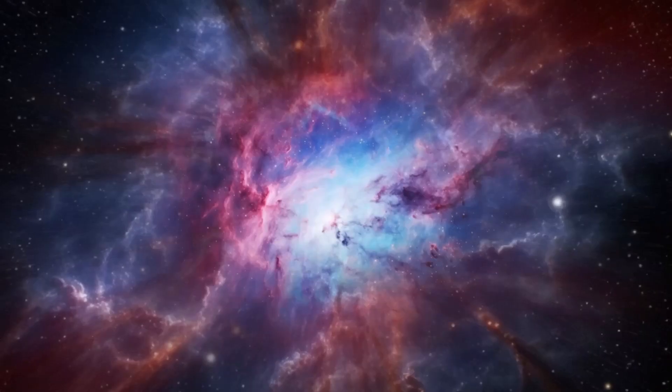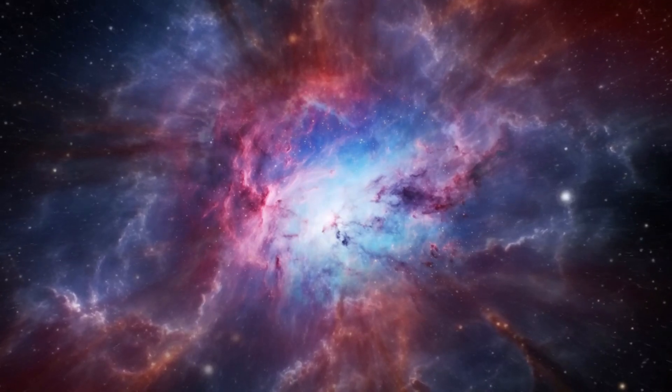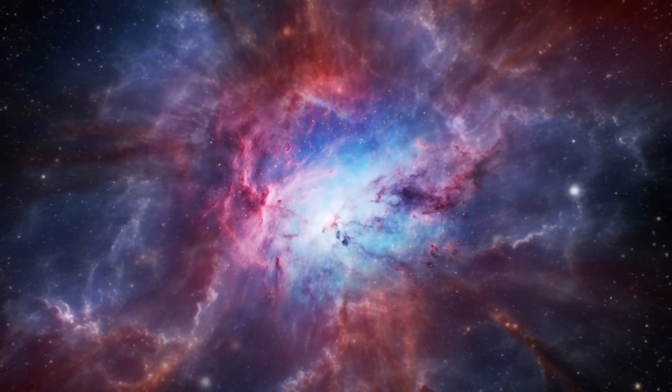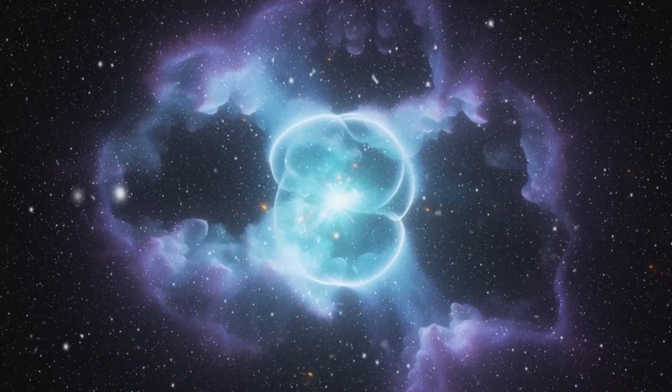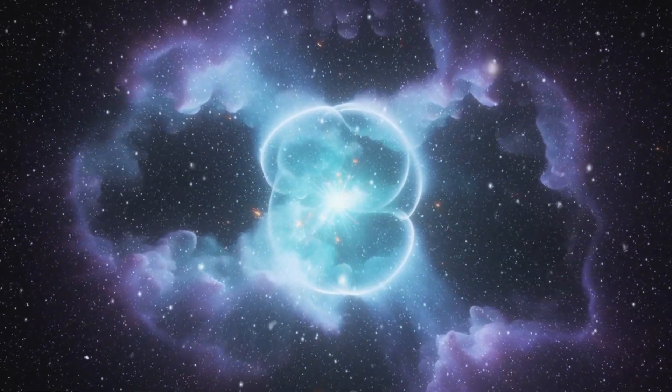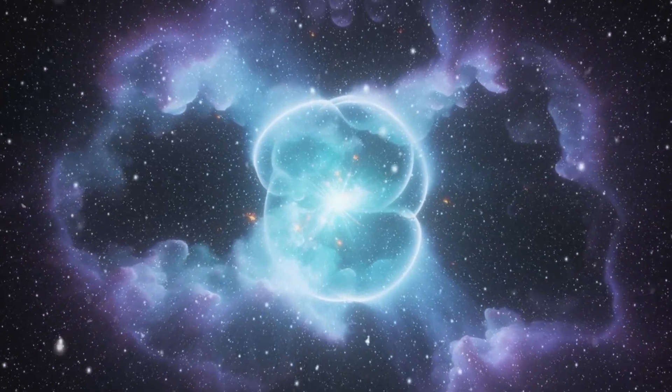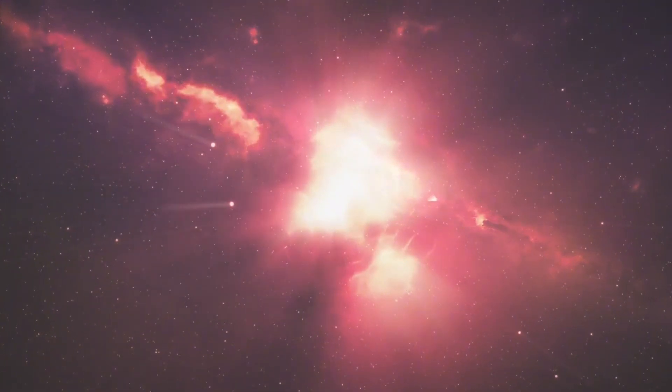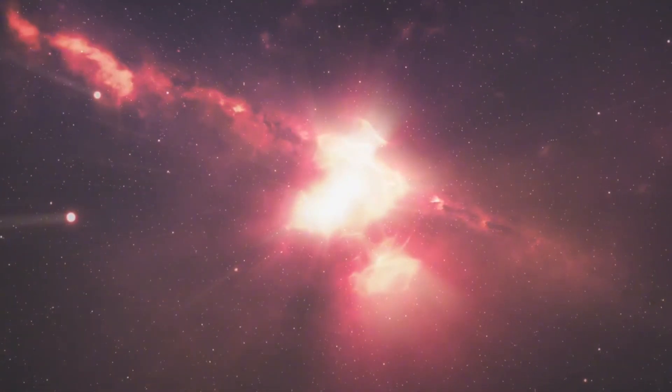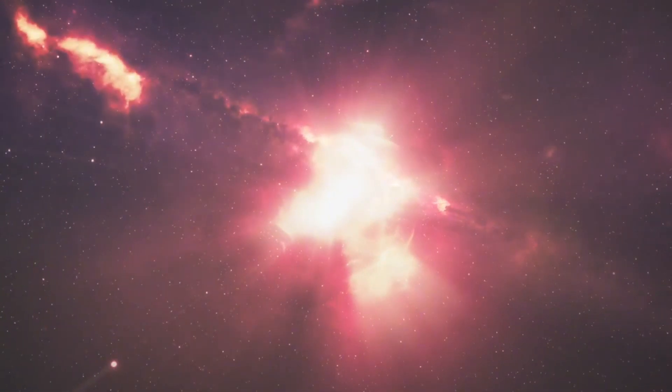The second theory suggests that while the universe may indeed be limited, it lacks a clear boundary. Instead, it is like a giant sphere or curved space connected to itself, much like the Earth. In this scenario, if one were to travel endlessly in any direction, they would eventually return to their starting point, much like circumnavigating the Earth.